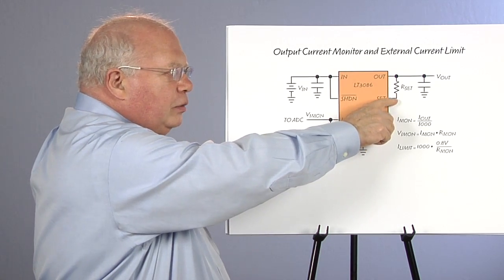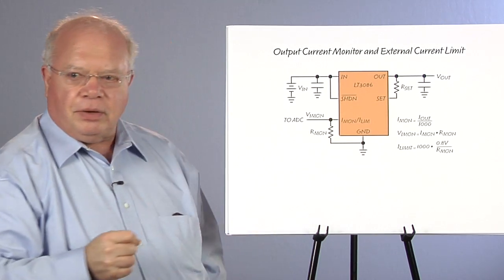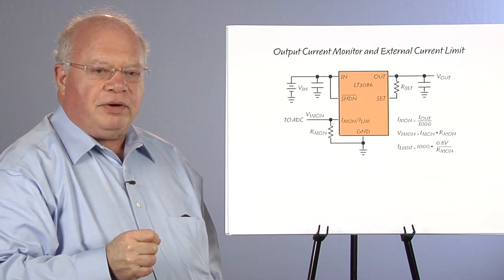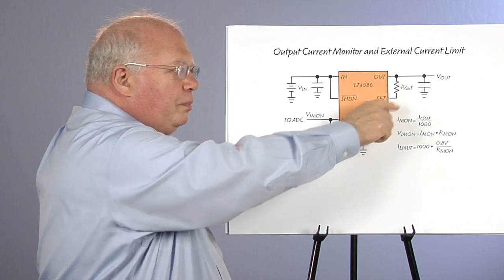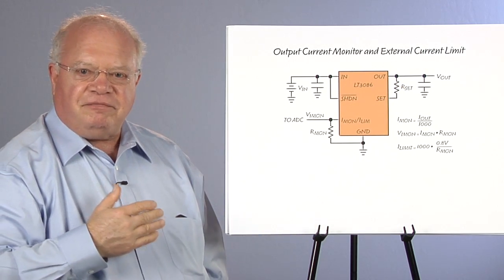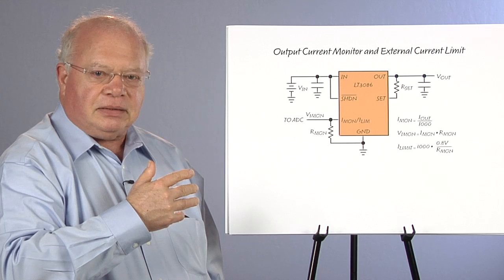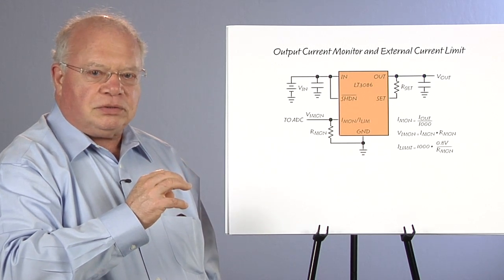The regulator loop regulates the bottom of the current source resistor to 0.4 volts. So the output is 50 microamps times the R set plus 0.4 volts.